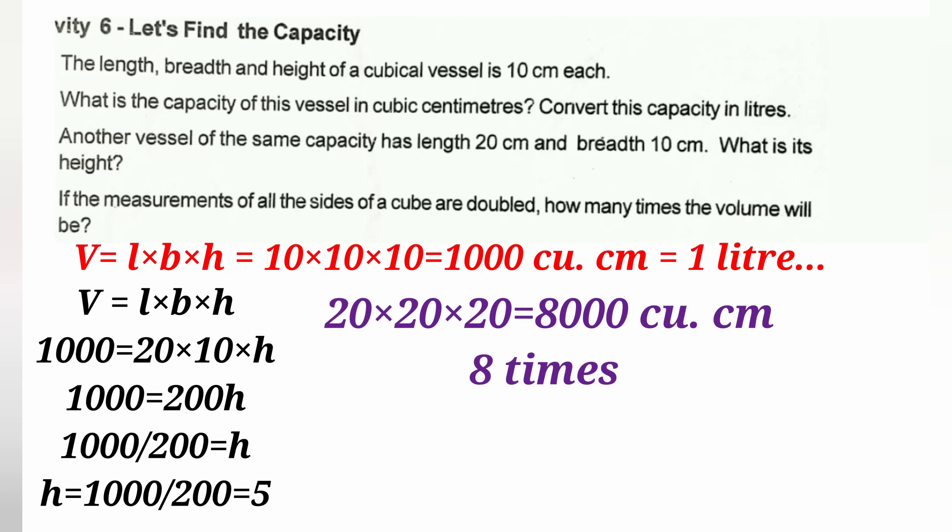If the measurement of all sides of a cube are doubled, how many times will the volume increase? If the original volume is 1,000 cubic centimeters, doubling all sides gives 20 x 20 x 20, which equals 8,000 cubic centimeters — meaning the volume increases 8 times.